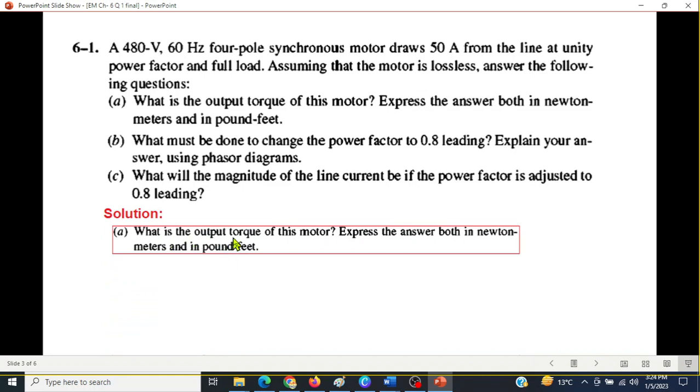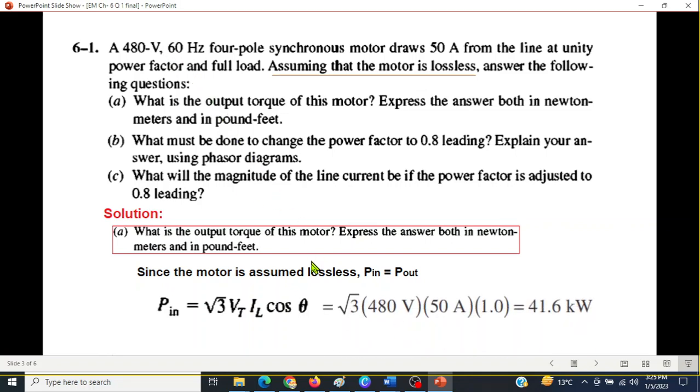The first question is what is the output torque of the motor? Express the answer both in newton meters and in pounds. First of all to find torque we need to calculate power. Because it is said that assume the motor is lossless, that means the input power should be equal to output power. The formula of power we know for three-phase systems is P_in is √3 terminal voltage VT, line current IL, and cosine of theta or the power factor.